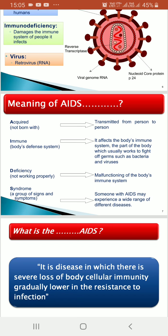The full form of AIDS is Acquired Immune Deficiency Syndrome. 'Acquired' means not born with — it is transmitted from person to person; it is not genetic or hereditary. 'Immune' refers to the body's defense system. 'Deficiency' means the immune system is not working properly. 'Syndrome' means a group of signs and symptoms — AIDS is not a single particular disease but a group of diseases.